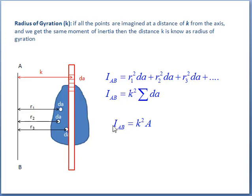Now, the moment of inertia is very simple. It is k square into A where k is the radius of gyration that can be obtained from the centroid of the lamina and the distance from the centroid from the reference axis.